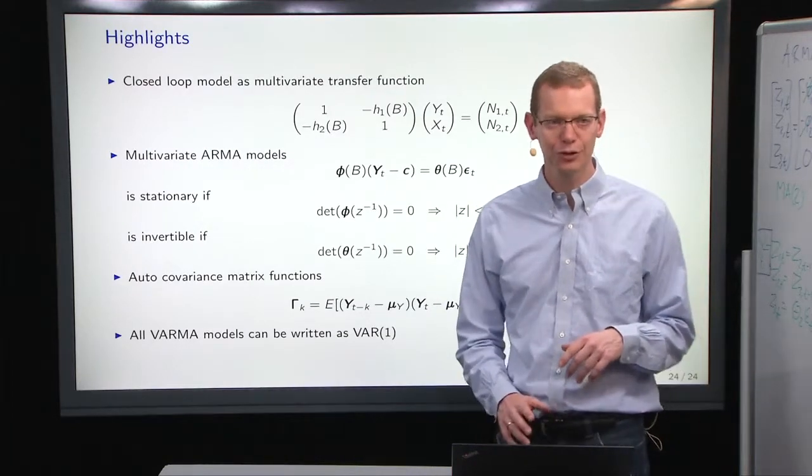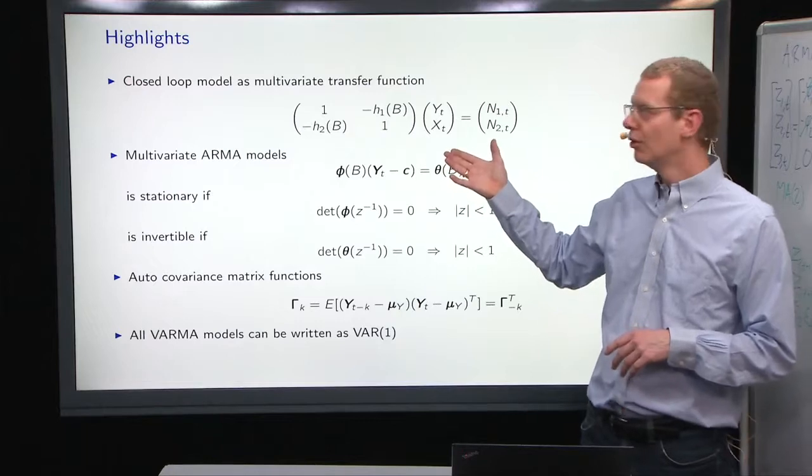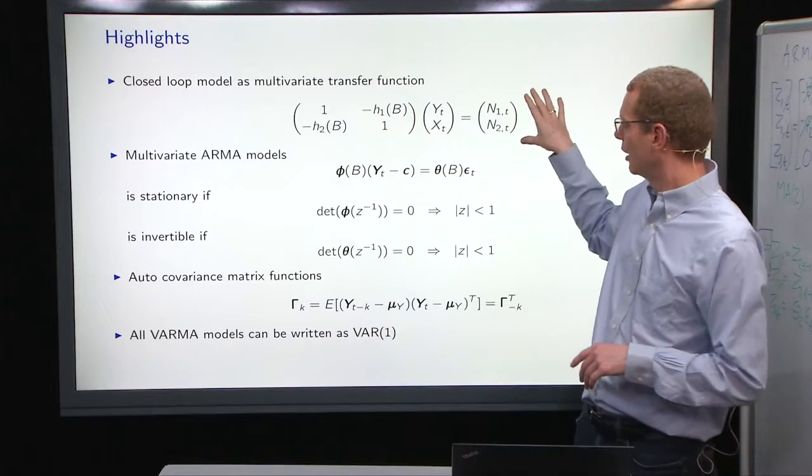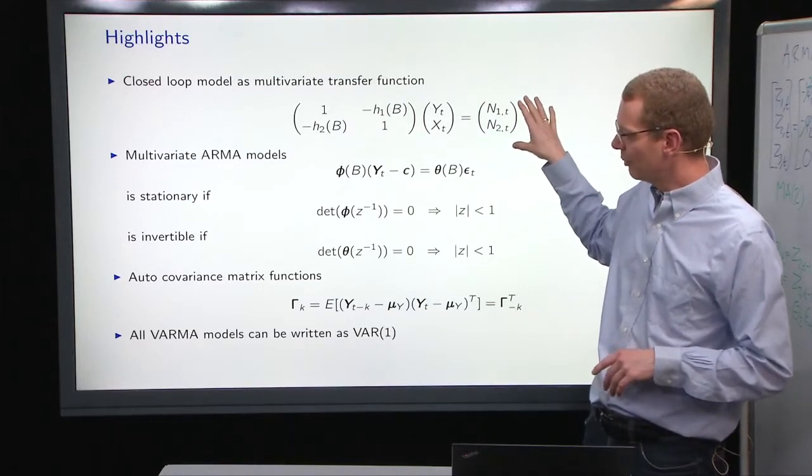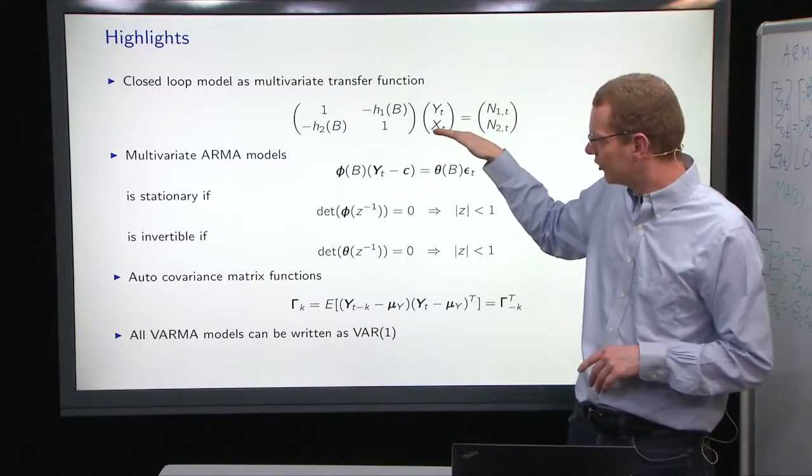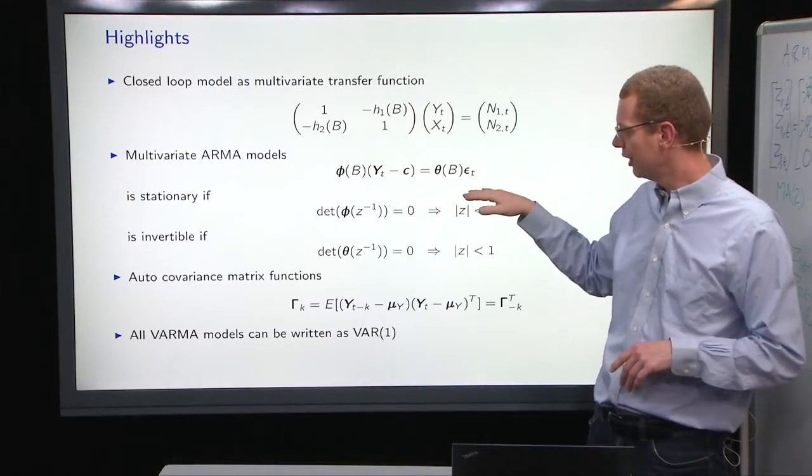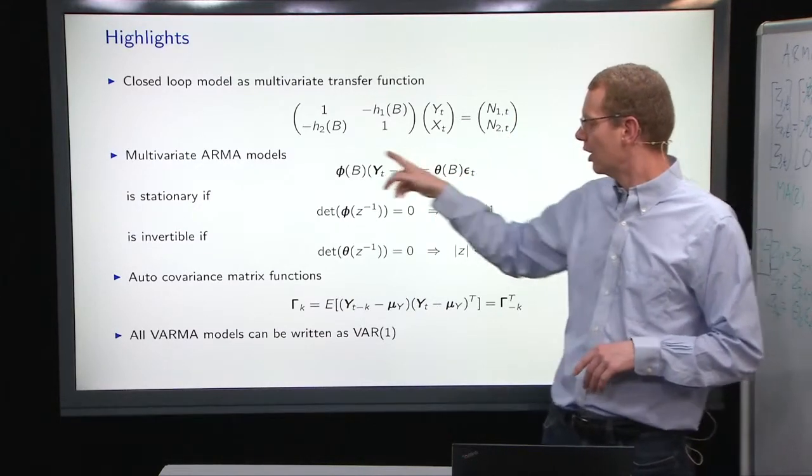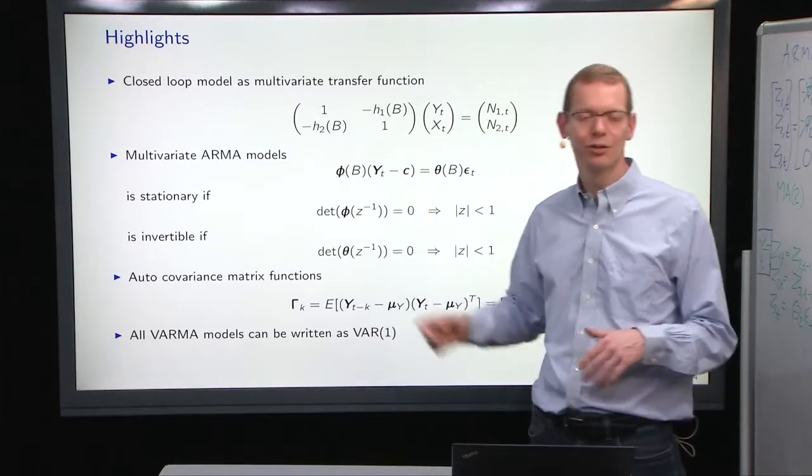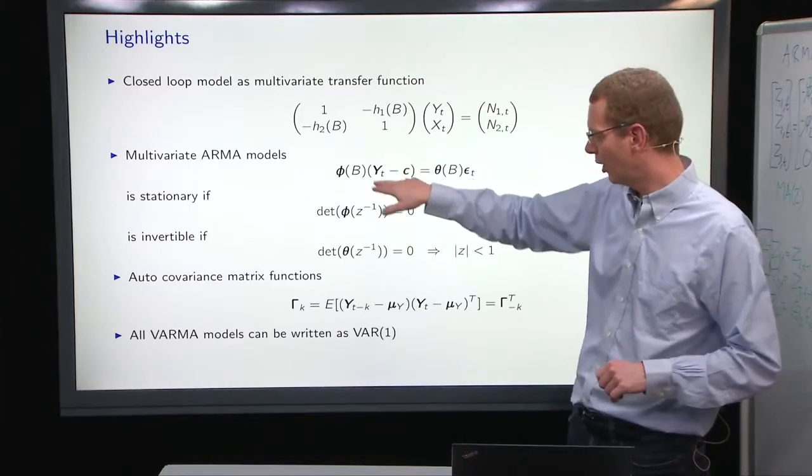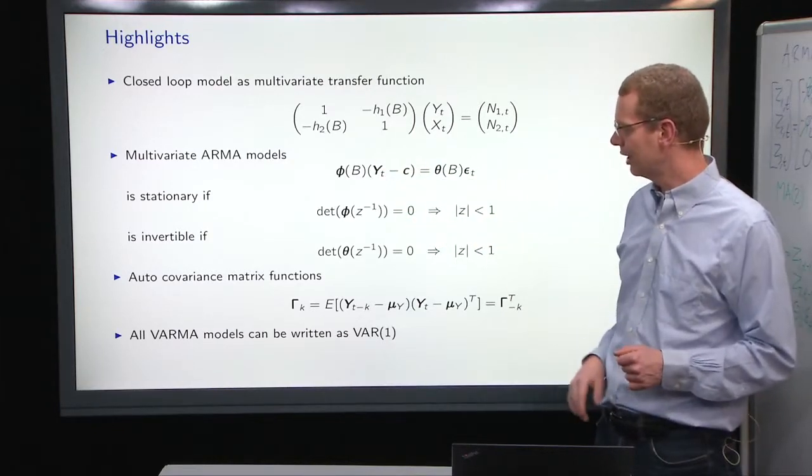So the highlights for today: first of all, the closed-loop representation as a multivariate transfer function. So that's one representation stepping on to the multivariate ARMA model to make this more generic in a sense. We can deal with the constant here. Typically, we just assume that it's zero, or do it once and for all, and then do the calculation as if zero.